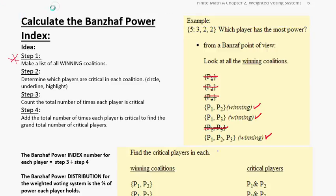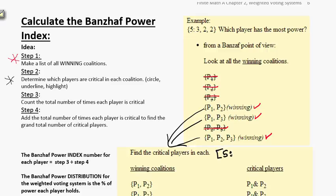So those are my winning coalitions — that's step one. Step two: I'm going to determine which players in each of these coalitions are critical. You need to mark them in some way — circle them, underline them, or highlight them — something to make them stand out. I'm going to take these three coalitions and work through them.